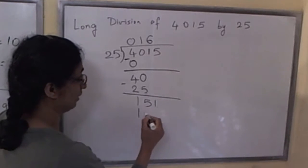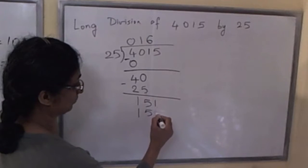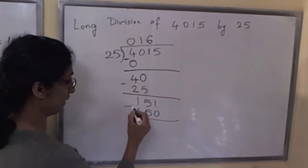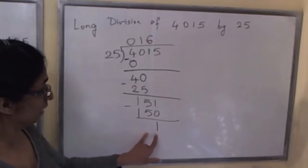And we get 150. We do the subtraction and we get a remainder of 1.